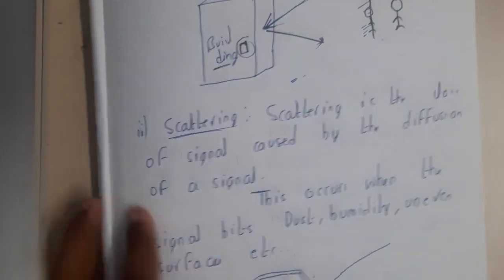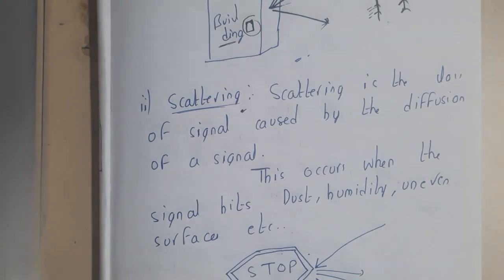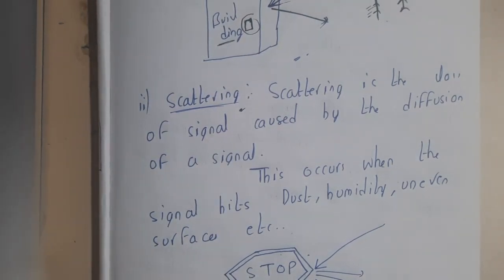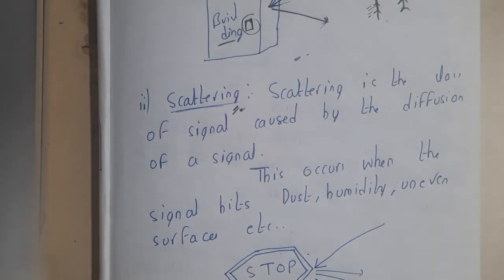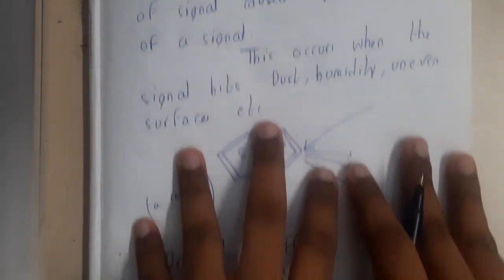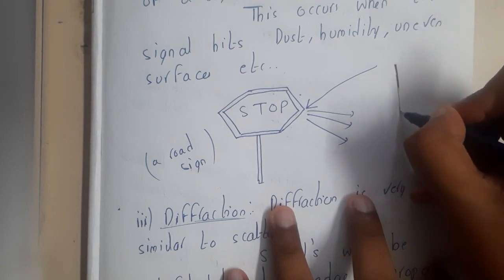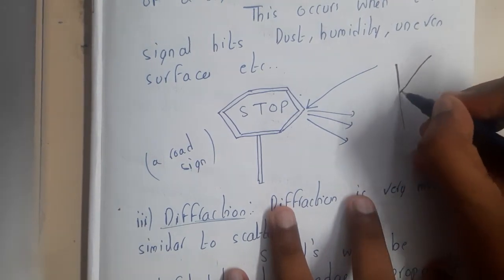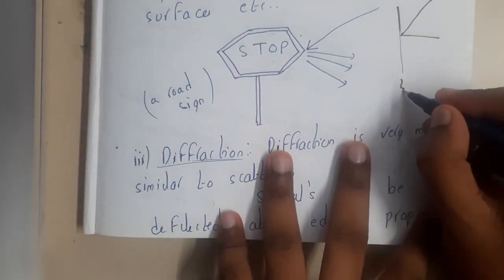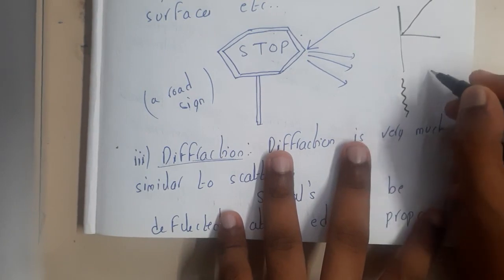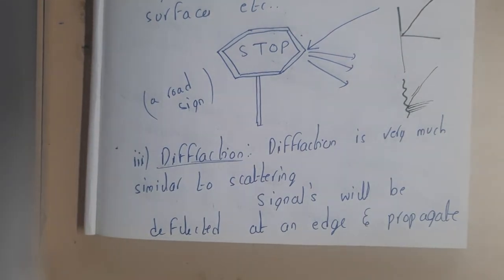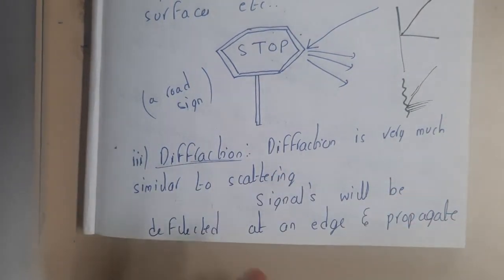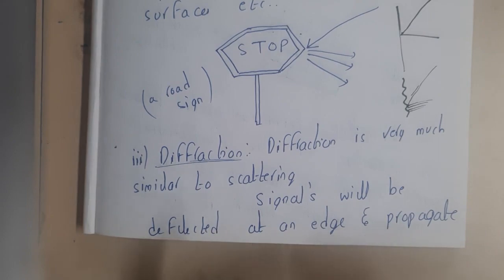The second problem is scattering. All these concepts apply to light, and whatever properties of light cause problems also apply to signal propagation. If the mirror surface is smooth, the reflection will go in a proper direction. But if the surface is not even, it will reflect in multiple directions. That concept is called scattering.